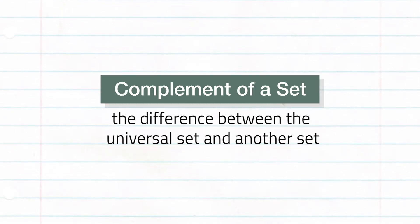The fourth and final operation is the complement of a set. It deals with the difference between the universal set and another set.